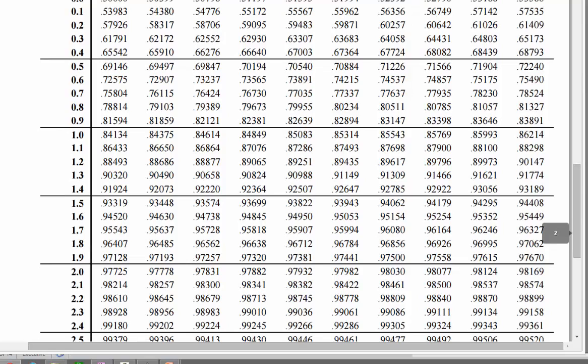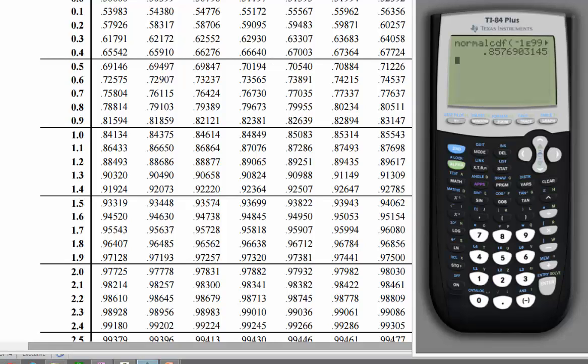And we find it here. So z 1.0. We scroll over until we find the column of .07 and we see that that's .85769. And sure enough, .85769 is the same thing we got on the TI-84. Just verifying to make sure it's correct.